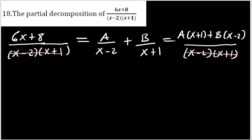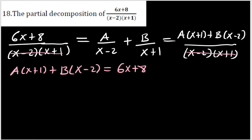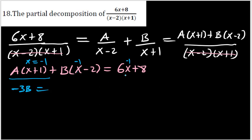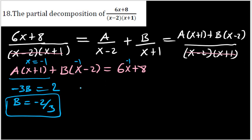Since the fractions are equal, we can equate the numerators: A(x+1) + B(x-2) = 6x+8. To find B, set x = -1 to eliminate A. The first bracket becomes 0, and the second gives (-1-2) = -3, so -3B = 6(-1)+8 = -6+8 = 2. Dividing both sides by -3 gives B = -2/3.